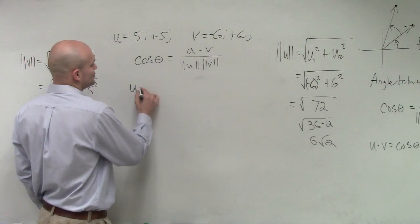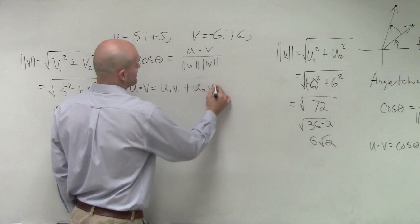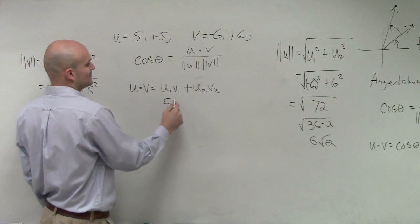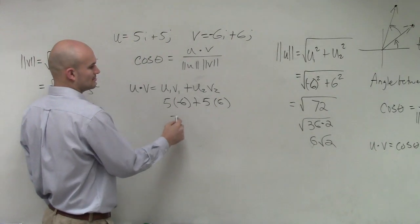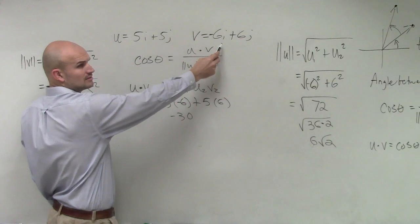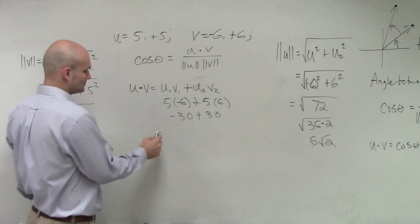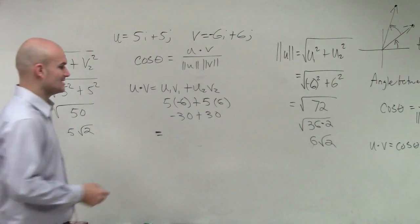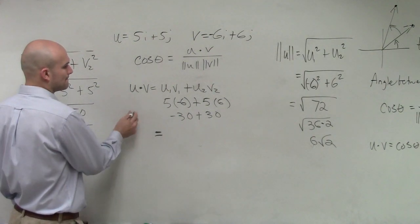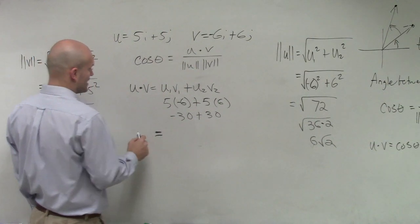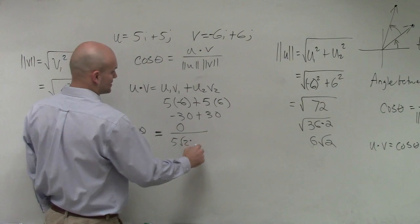So now, we need to do the dot product. Remember the dot product. U dot V equals U1 times V1 plus U2 times V2. So therefore, we go through this. It's 5 times negative 6 plus 5 times 6. So therefore, this equals negative 30. Negative 30 plus 30. Well, therefore, if you guys have it at 0. So therefore, I'm going to have 0. So I have cosine of theta equals 0 over 5 square root of 2 times 6 square root of 2.